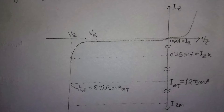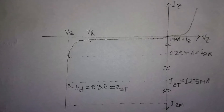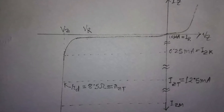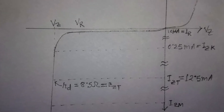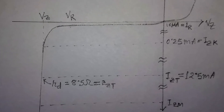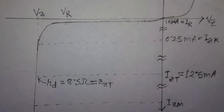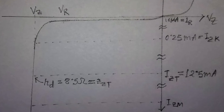Zener diode exhibits controlled breakdown and allows current to keep the voltage across the Zener diode close to the Zener breakdown voltage. The location of the Zener region depends on the doping levels. An increase in doping concentration results in a decrease in Zener potential.